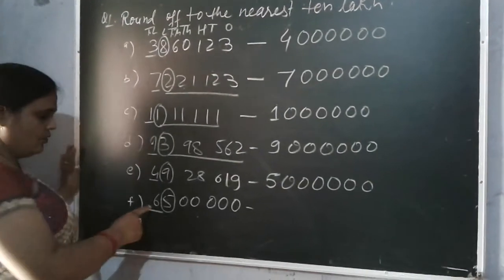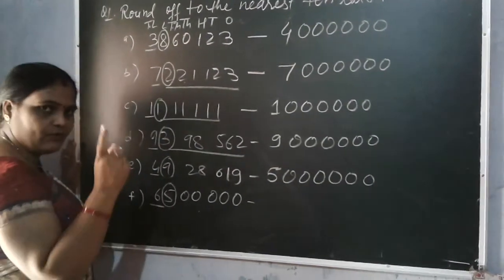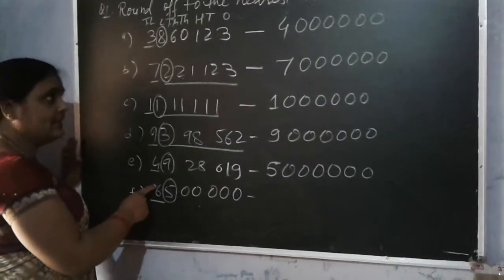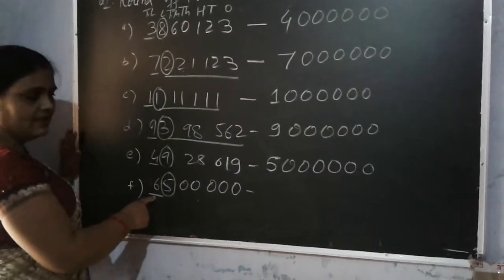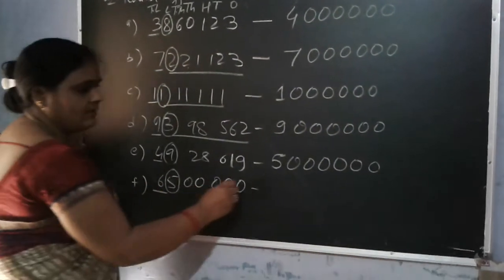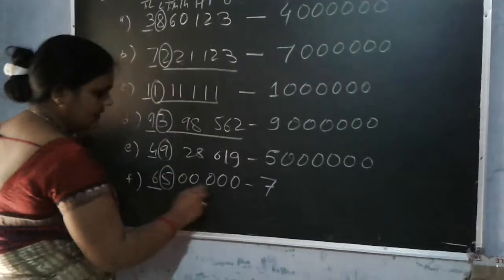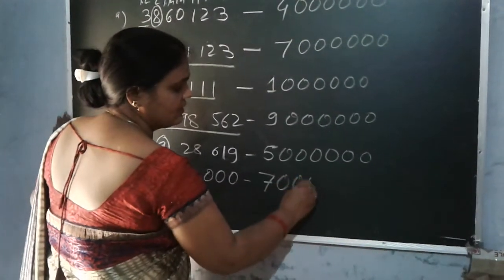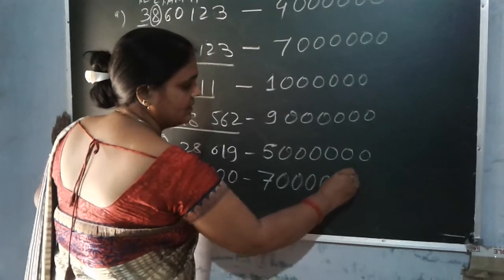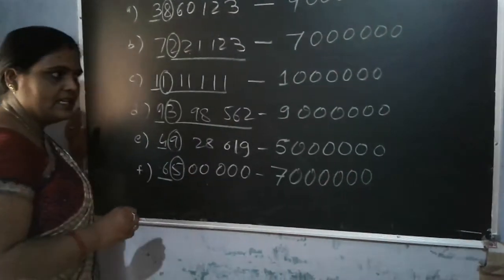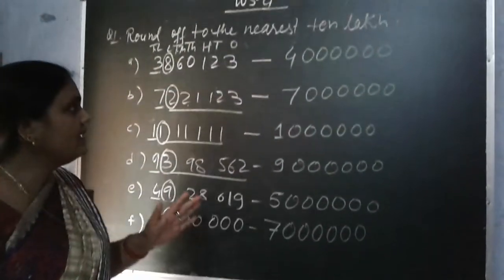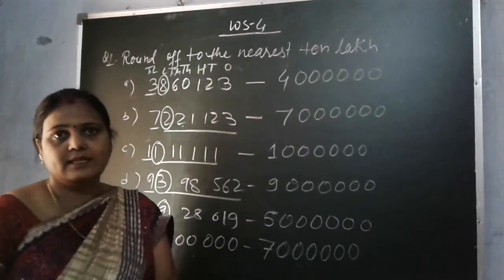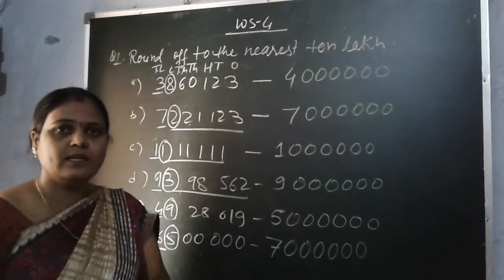So here 5 is equal to 5, so we add 1 to the 10 lakh digit: 6 plus 1 equals 7. Then put 6 zeros — 1, 2, 3, 4, 5, 6. In this way, we round off to the nearest 10 lakh digit. Thank you.